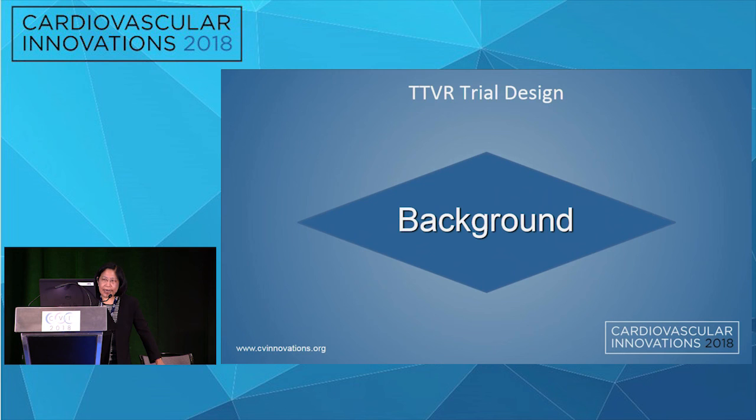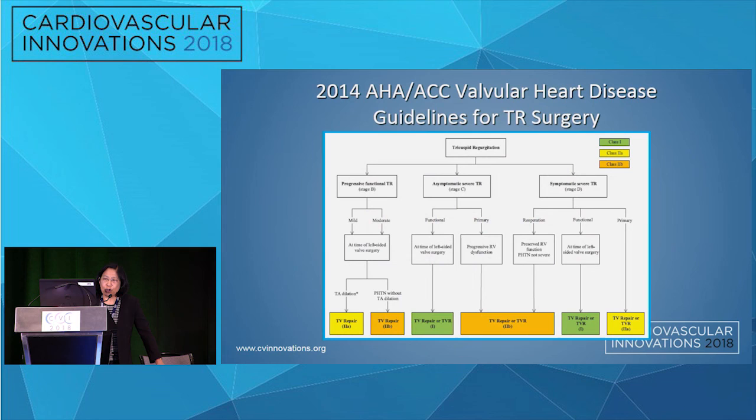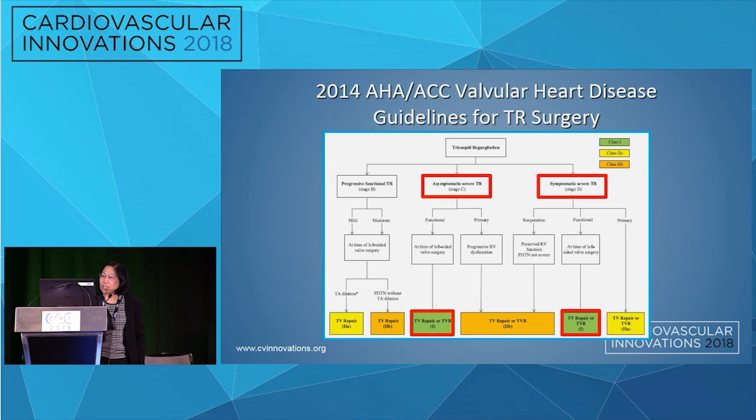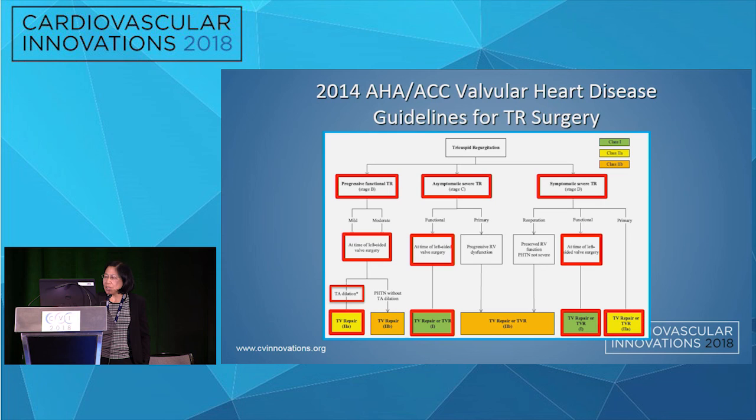The background for transcatheter tricuspid valve — either replacement or repair — trial design has to do with guidelines and their gaps. Currently there are only two class I indications for taking patients to surgery: asymptomatic but severe patients at the time of left heart surgery, and symptomatic severe tricuspid regurgitation patients at the time of left heart surgery.